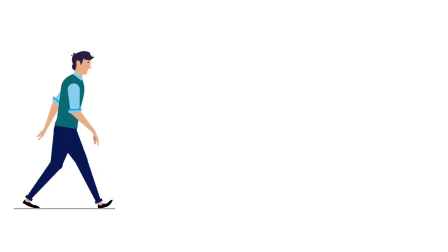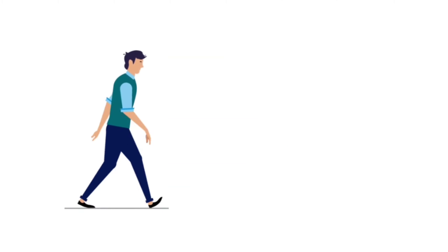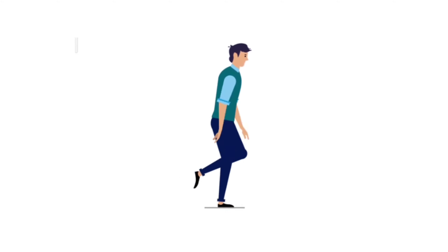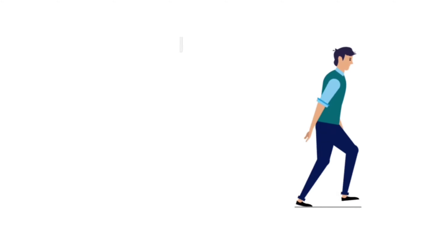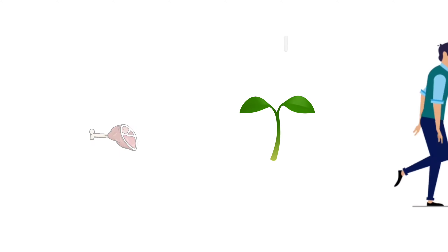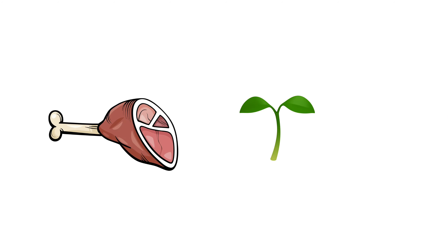Children, humans are also omnivores because they also eat both plants as well as the flesh of other animals.